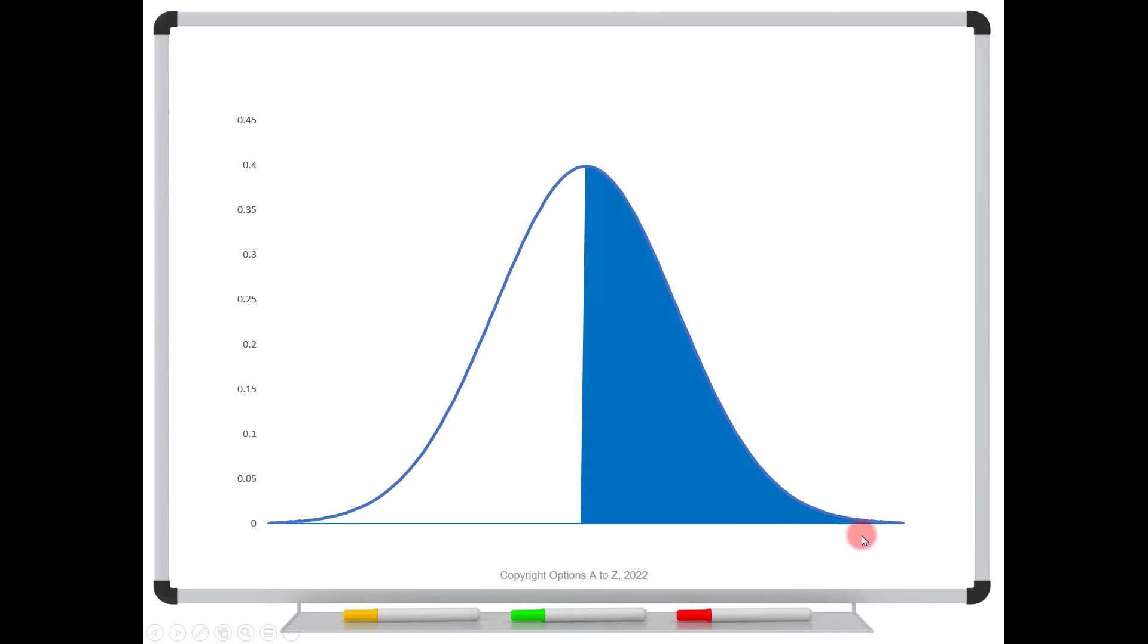Same thing for very large price moves. The height of the bell curve over here is fairly small. So it's telling us that we have a very low probability for the stock prices out here. So that's what's giving shape to this bell curve.